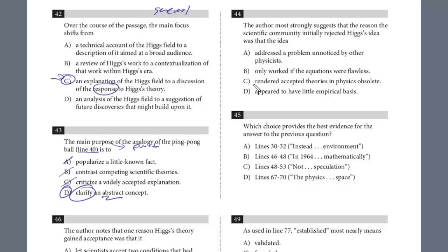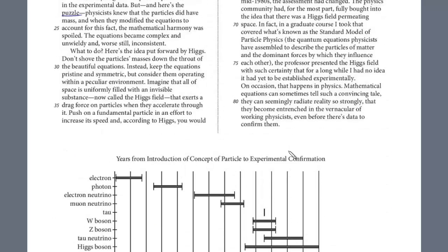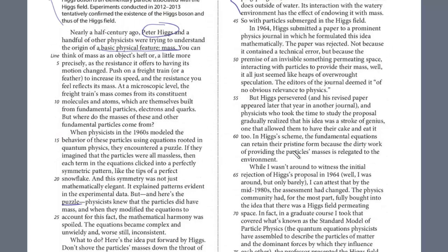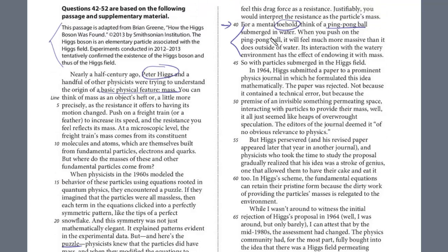All right, 44 and 45. Remember, we're always going to scan down. We see this is a two-part question. So let's read 44. The author most strongly suggests that the reason the scientific community initially rejected Higgs's idea was that what? And we know that the evidence is bound between 30 and 70. So we're just looking for evidence when it was rejected and why. And so again, you try these on your own, but you're looking for some evidence between 30 and 70 that it was rejected.